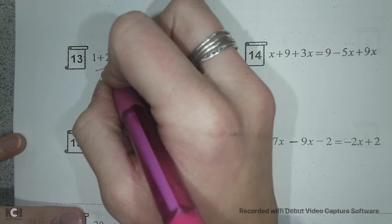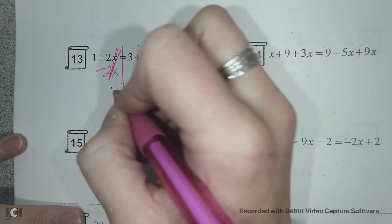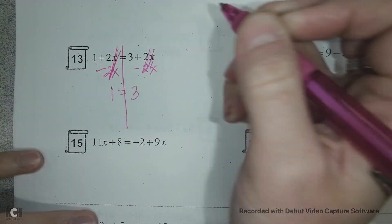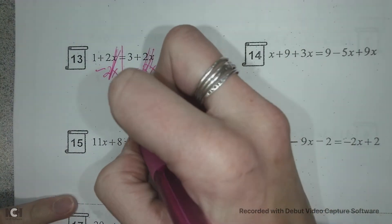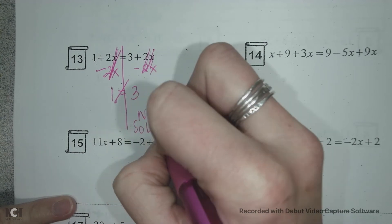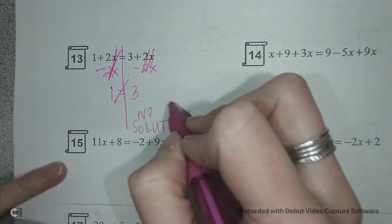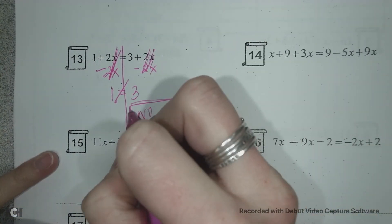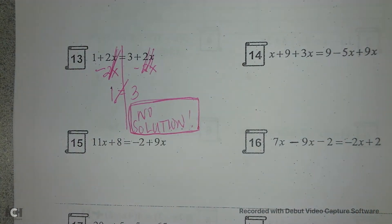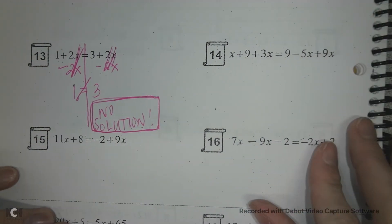And now my x's are both gone. So I have 1 equals 3. 1 doesn't equal 3. So this is a no solution. If you get a 1 solution, we want to know what the answer is. If it's a no solution or an infinite, you just write that.